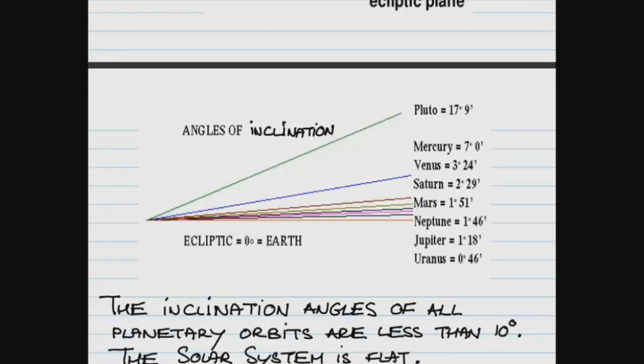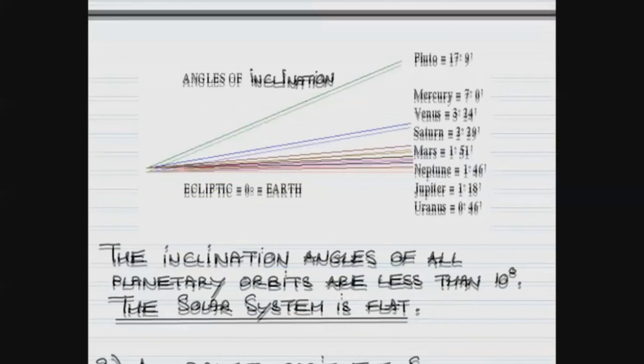Saturn, over two degrees. For Mars, almost two degrees. Neptune, almost two degrees. And Jupiter, close to just one degree. And for Uranus, it's very small.